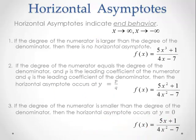The second thing we're looking at is horizontal asymptotes. Horizontal asymptotes indicate end behavior — what is the graph doing on the far left and on the far right, which is what's meant by x going to infinity and x going to negative infinity. For horizontal asymptotes, we have to look at both the numerator and the denominator, and we're comparing their degrees.